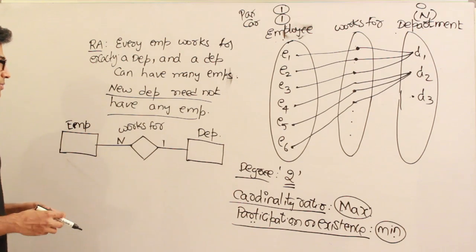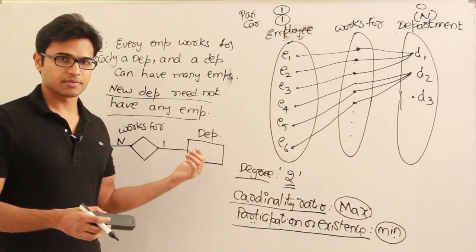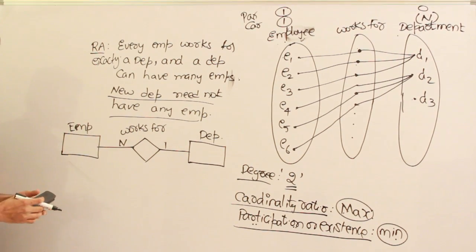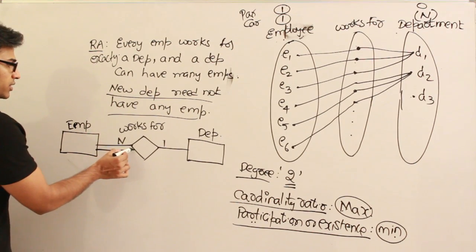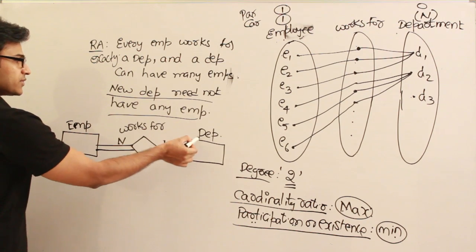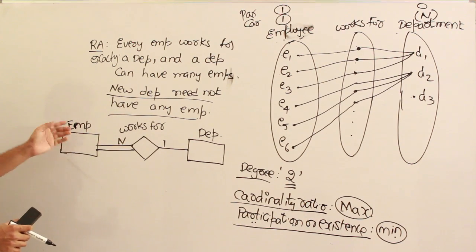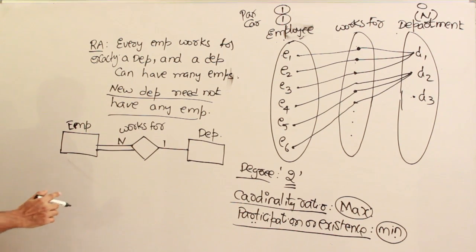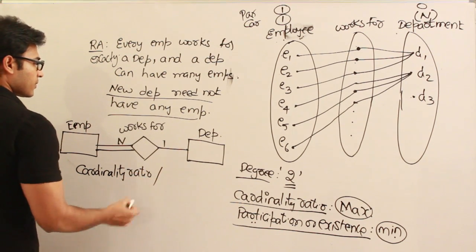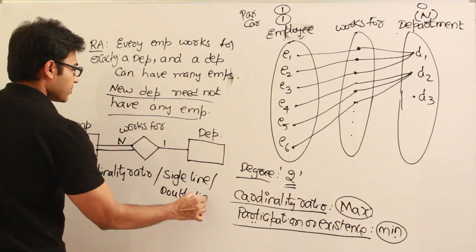For participation, if it is total participation — meaning all entities of a set participate in the relationship — we use double lines. If it is partial participation — meaning only some entities participate — we use single lines. Since every employee must work for a department, employee has total participation (double lines). Since a new department need not have any employees, department has partial participation (single lines). This is called the single line / double line representation of the ER diagram.